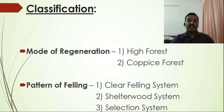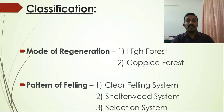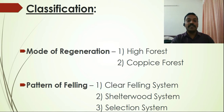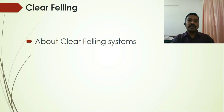The second important classification is based on the pattern of felling, which can be further divided into clear felling system, shelterwood system, and selection system. The pattern of felling refers to whether felling is concentrated on a particular area or spread throughout the area. Each of these three systems follows a different pattern of felling.